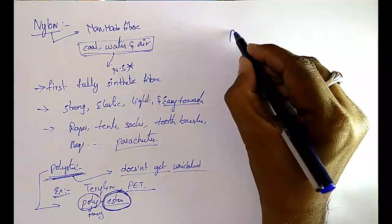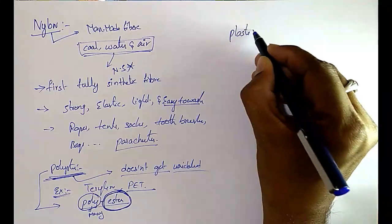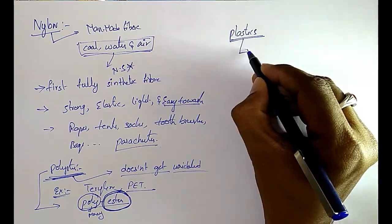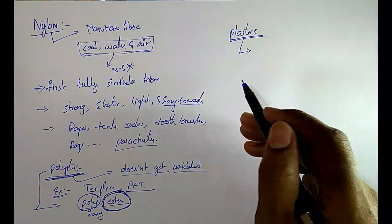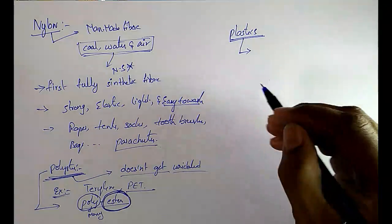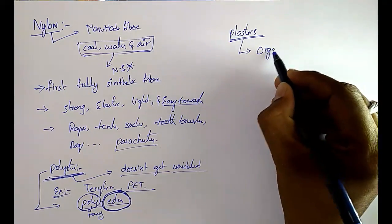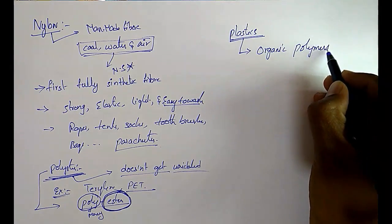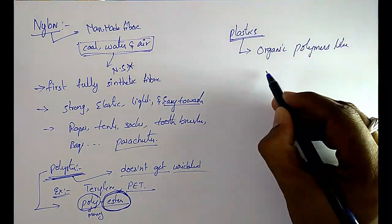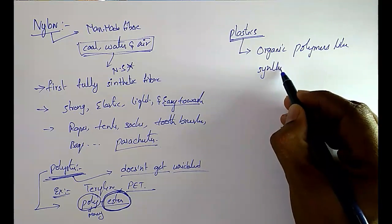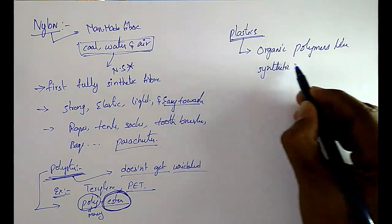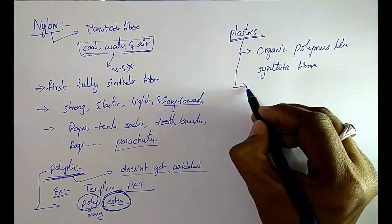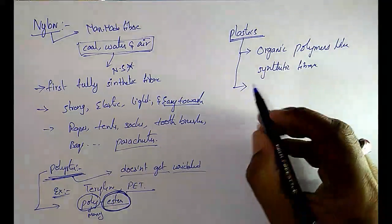Next, plastics. These plastics are also organic polymers, like synthetic fibers. These are also two types: natural plastics and synthetic plastics.